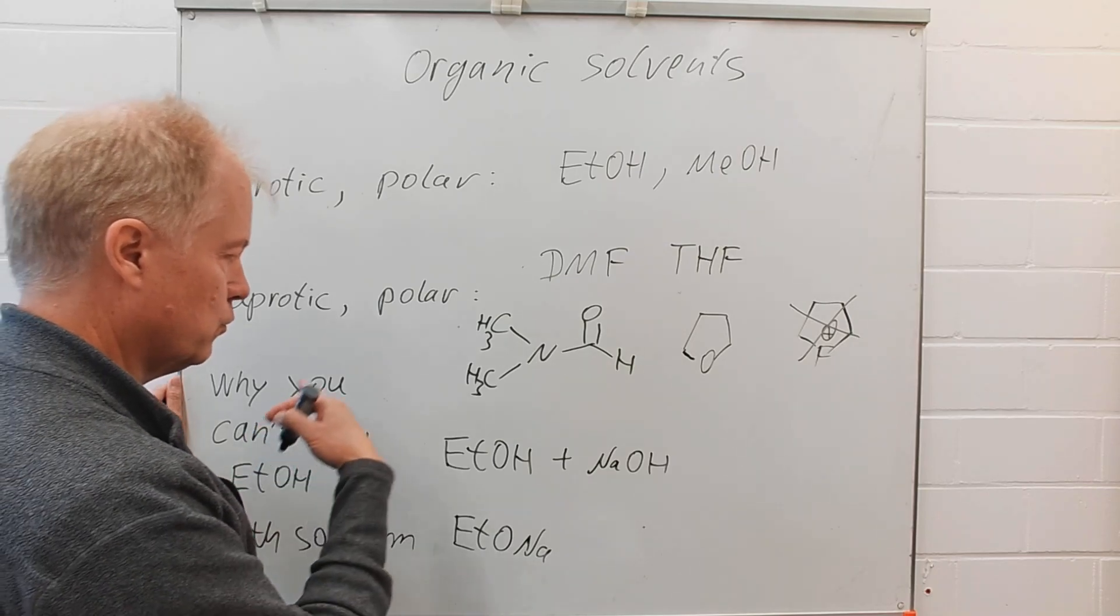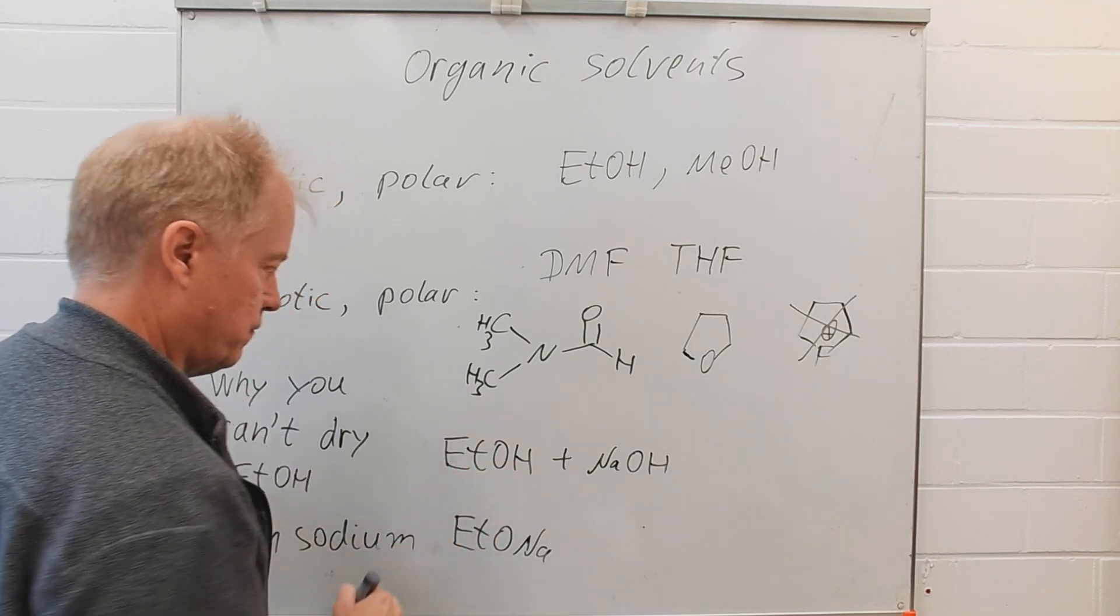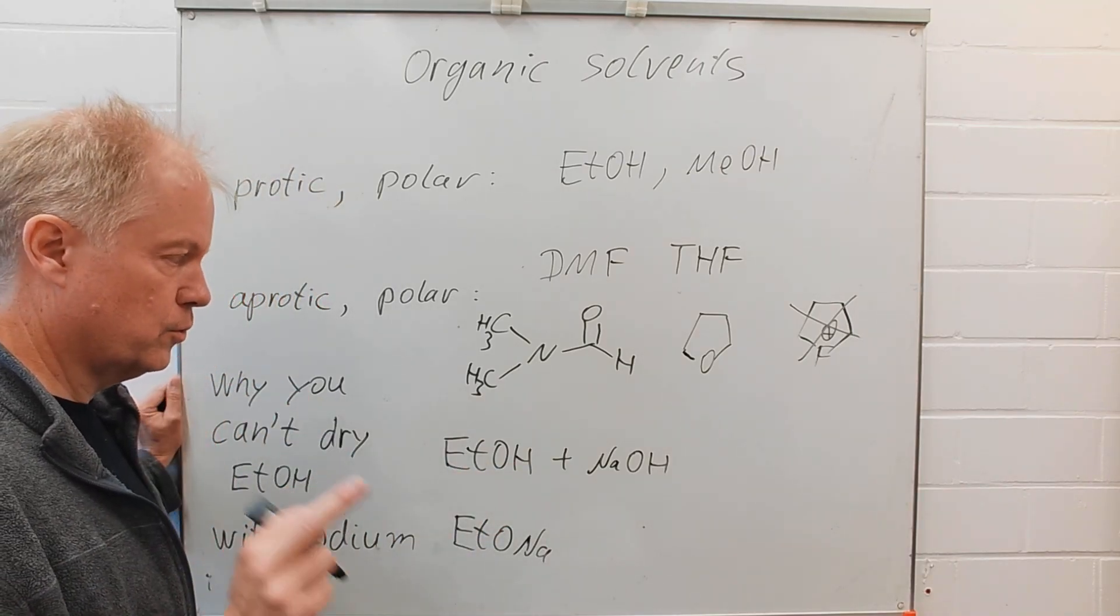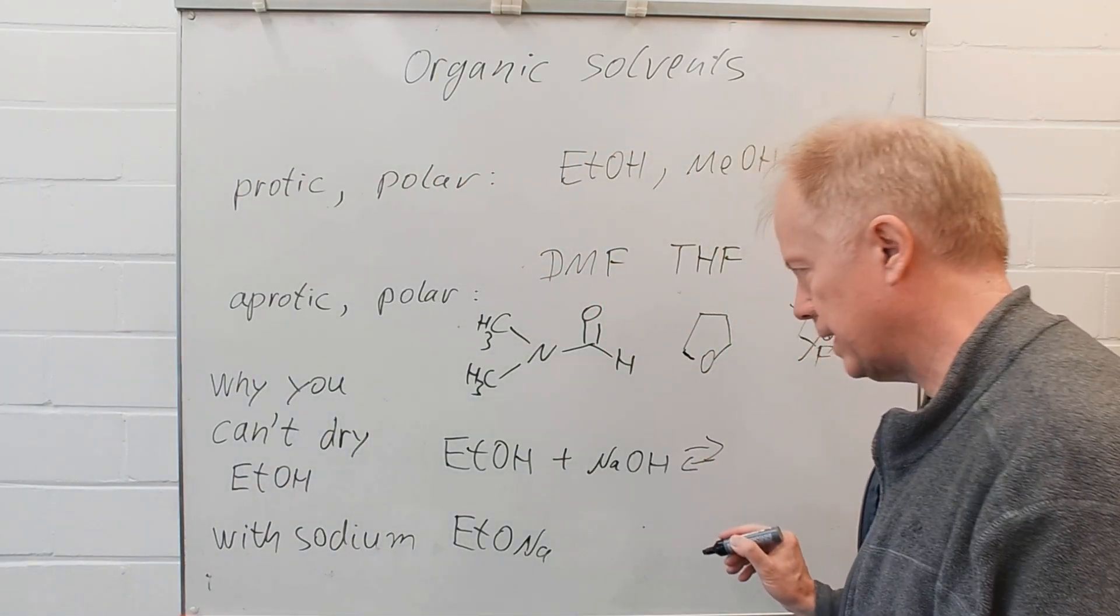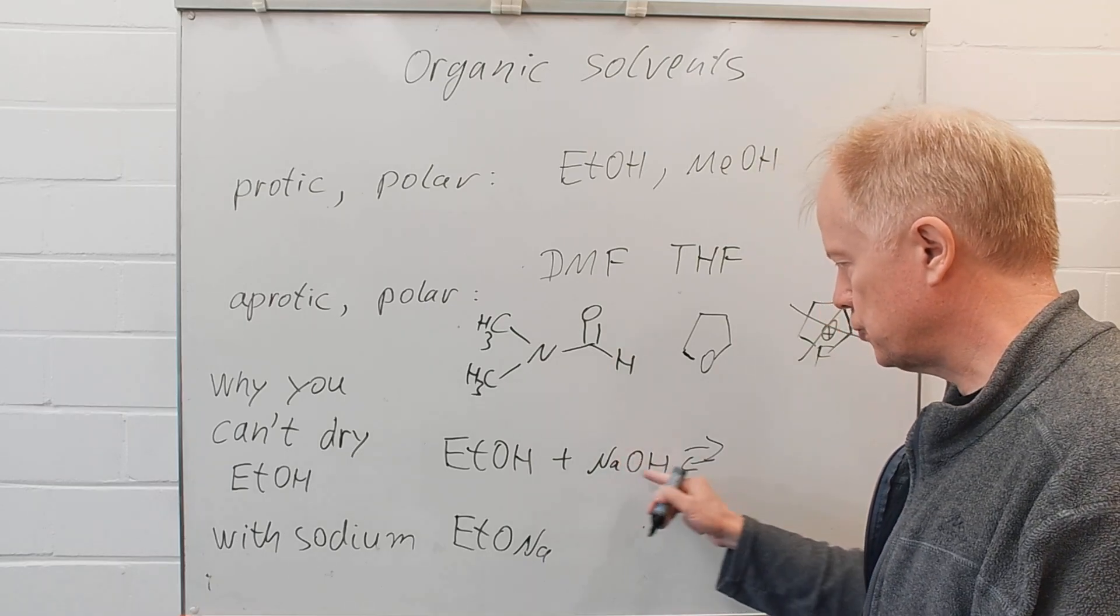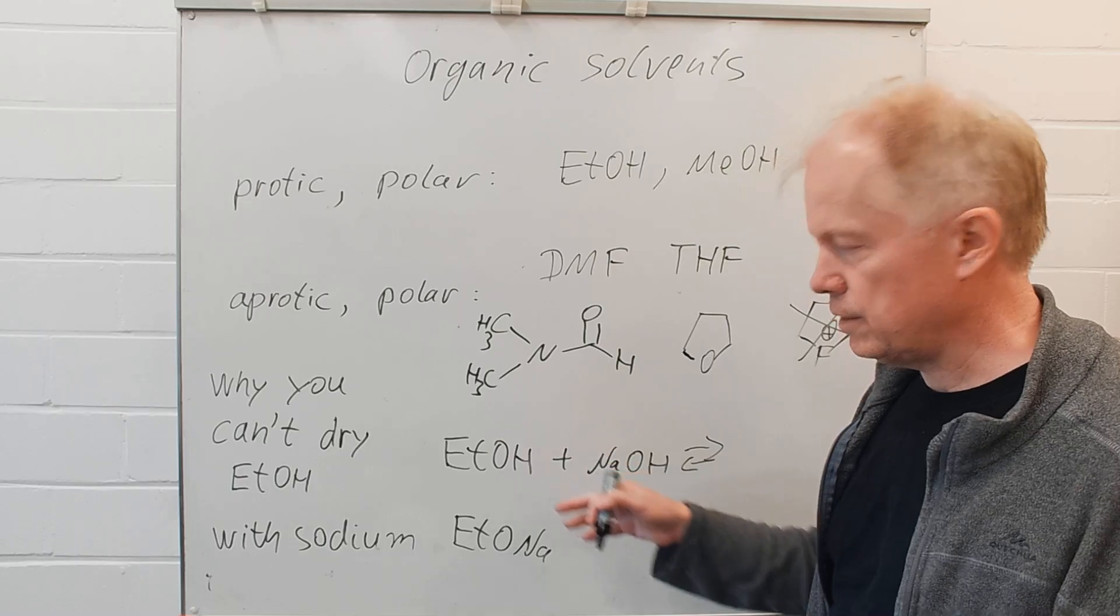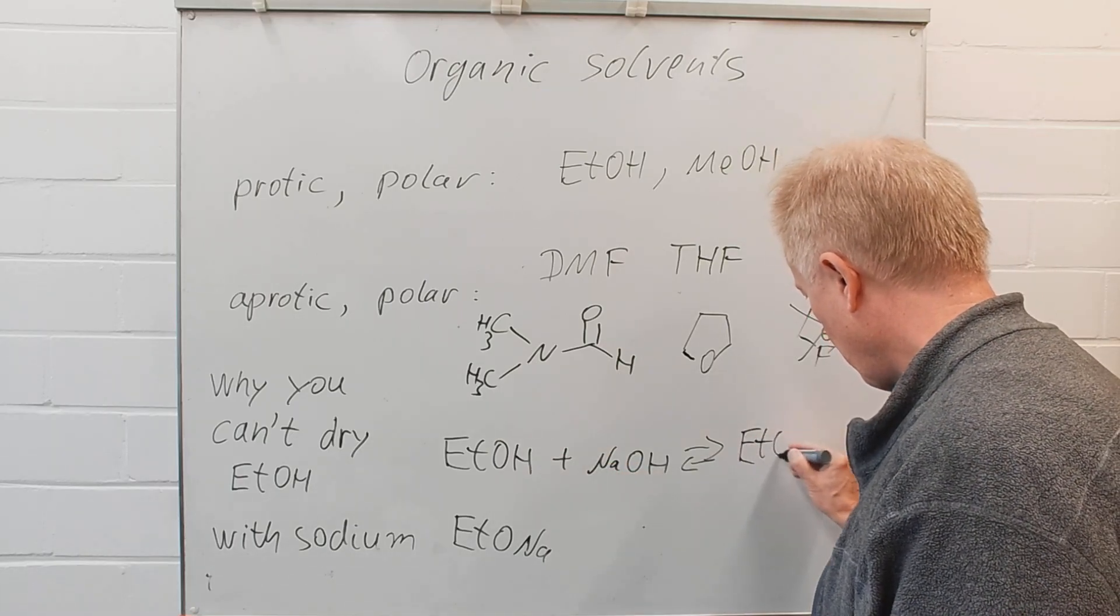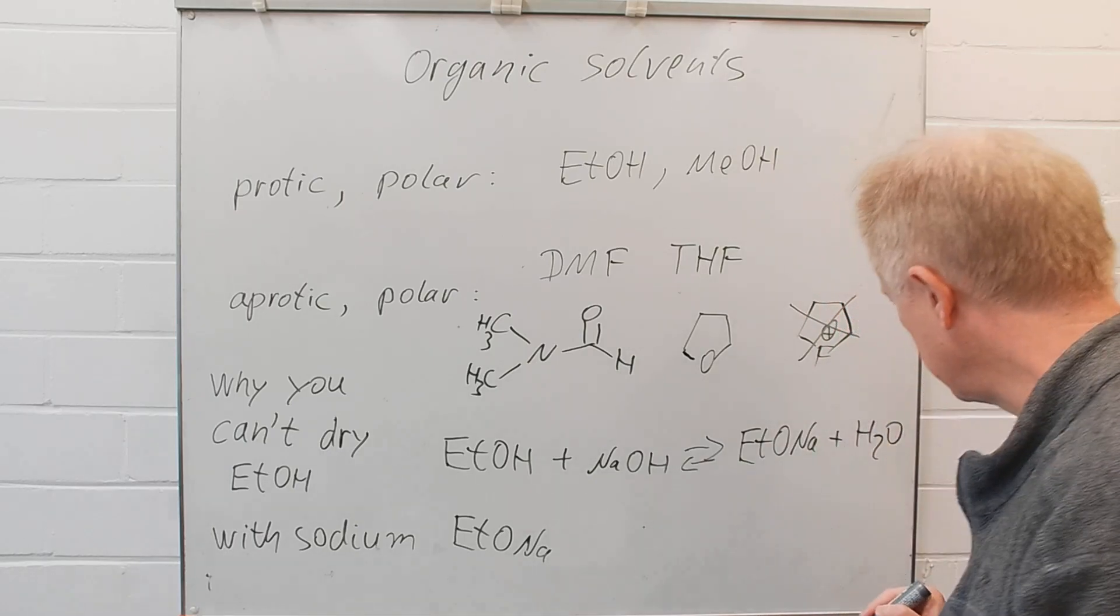If you try to distill off the dry ethanol, this won't work. Because you have an equilibrium reaction, sodium hydroxide is able to deprotonate ethanol in equilibrium. And water is formed again.